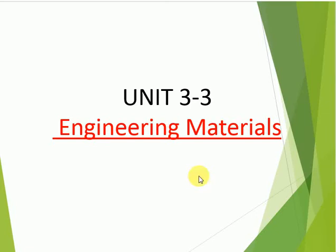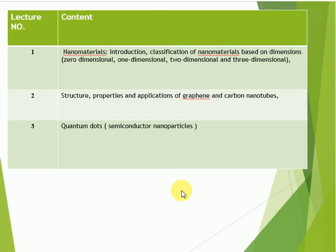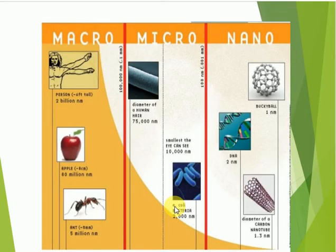Good morning students. This is my third lecture on unit number three, engineering materials. The content covers nano materials, including: introduction and classification of nano materials based on dimensions — zero dimensional, one dimensional, two dimensional, and three dimensional. Second: structure, properties and applications of graphene and carbon nanotubes. Third: quantum dots and semiconductor nano particles.